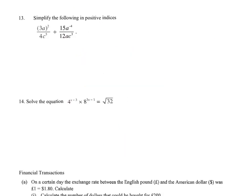Question 13: simplify the following in positive indices. First, the square applies to both 3 and a: 3 squared is 9, giving 9a squared over 4c to the power of 5. Before division, I notice there's a power of negative 4 — this power of negative 4 applies only to a. So this power of a shifts down to the denominator. We already have a to the power of 1 in the numerator; combined it becomes a to the power of 5 in the denominator, giving 12a to the power of 5 c cubed.